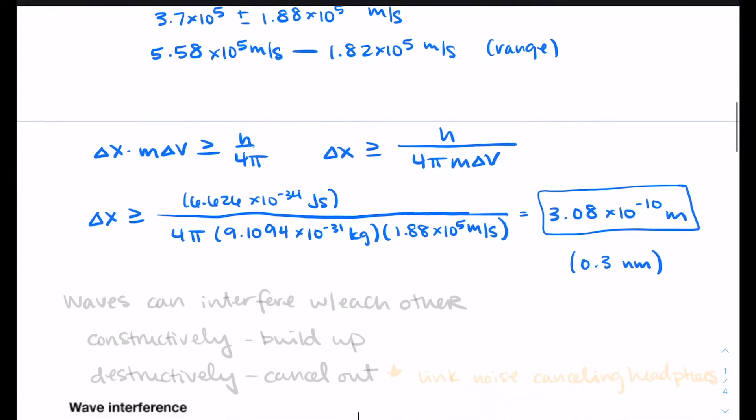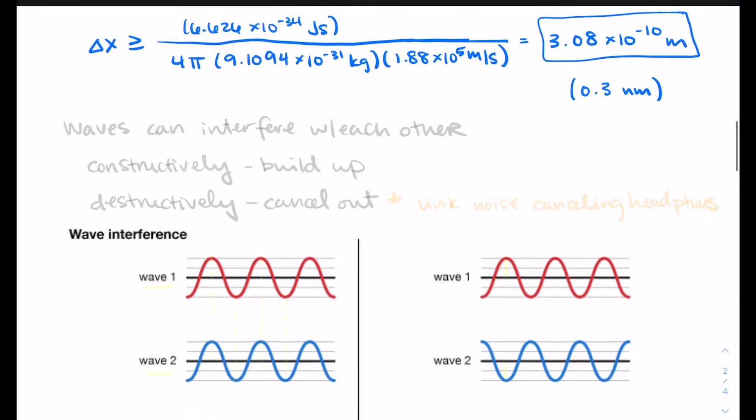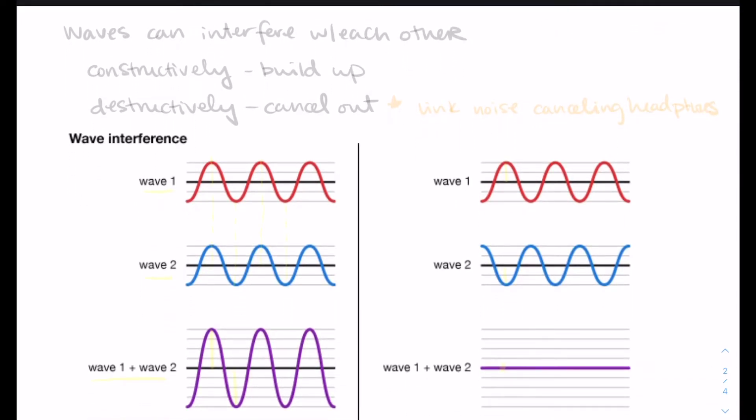So when we are thinking about wave properties, one of the properties of waves is that they can interfere with each other. They can interfere constructively, which means that they build each other up, or they can interact destructively, which means they cancel each other out. I have some pictures, we're going to graphically think about what this would look like. But I also have a link on Canvas to how noise-canceling headphones work. What noise-canceling headphones are doing is gathering noise information around you and generating a wave that will perfectly destructively interfere with the noise around you, which cancels that noise out.